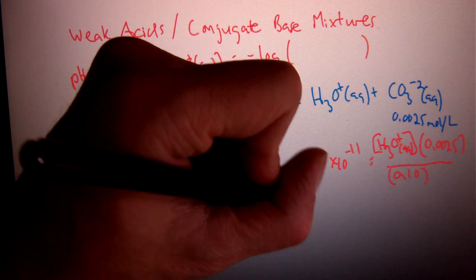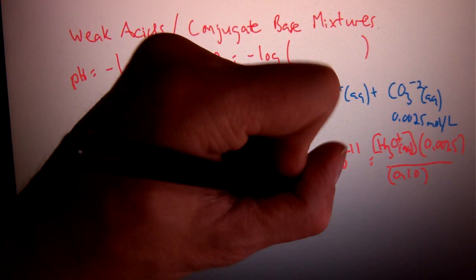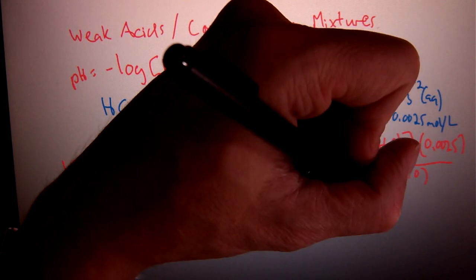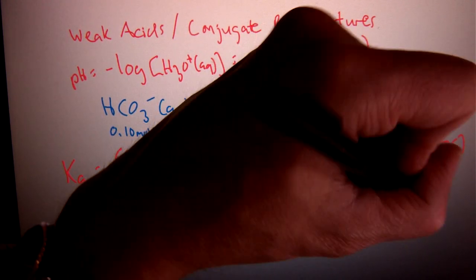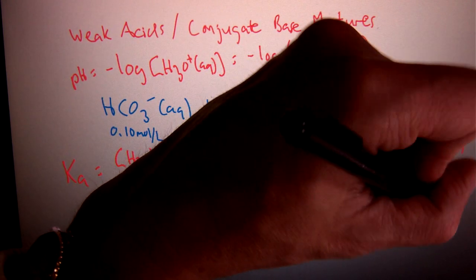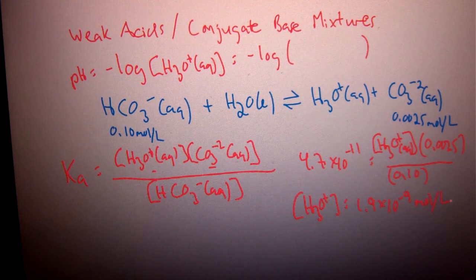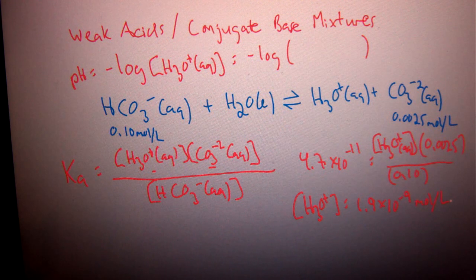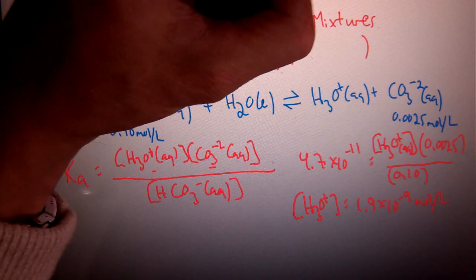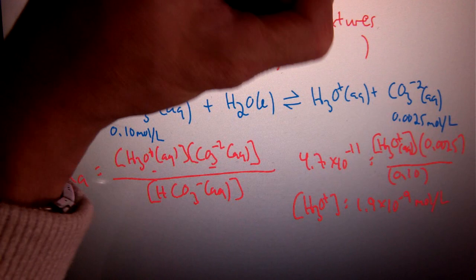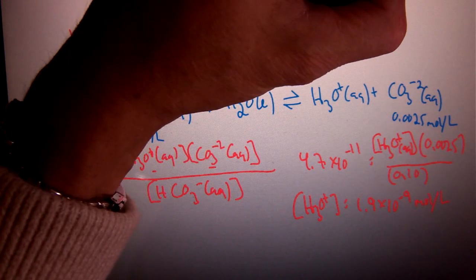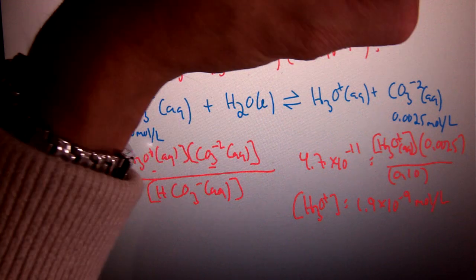So, when I rearrange all that and isolate H3O+, I end up with a value of 1.9 times 10^-9 moles per liter. That could be the end of your question. If it's not, don't round that value. Leave the complete unrounded value in your calculator and plug it in to your log formula. And solve that. We get a final answer of 8.73.